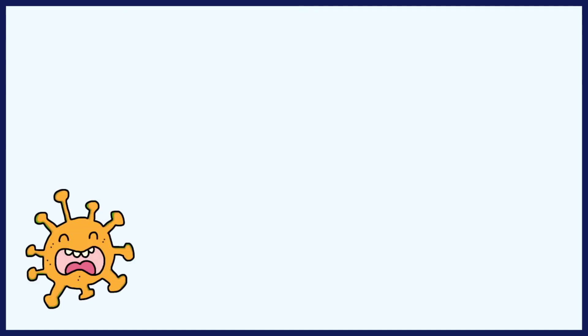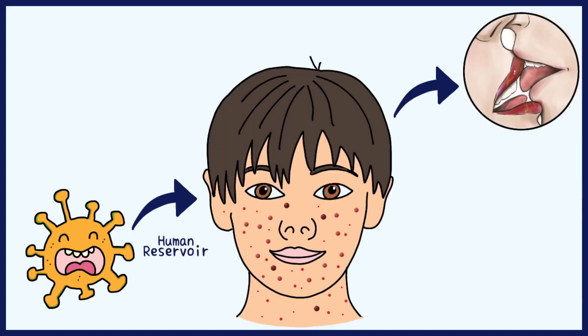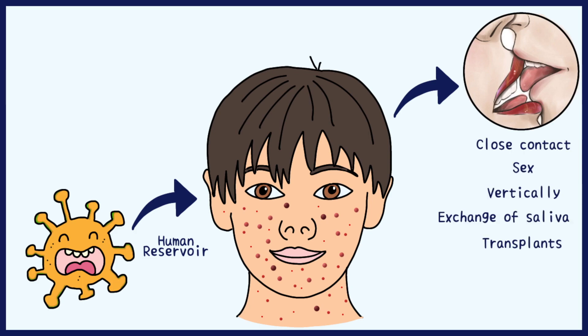The virus, like the rest of the herpes family, is always found in a human reservoir. It can be easily transmitted from an infected individual by having close contact with them. Sexual contact, mother-to-child transmission, exchange of saliva, or transplant of an infected organ can result in the disease.